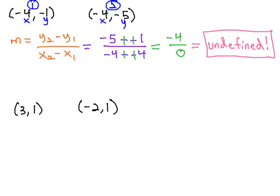This is the case that we saw when we had the graphs, where we have a vertical line with an undefined slope.